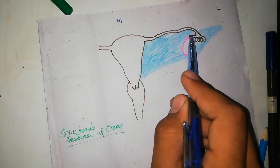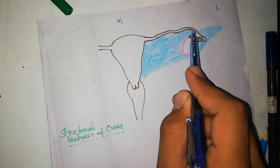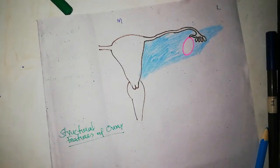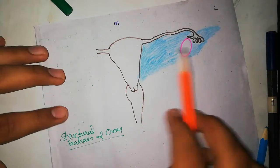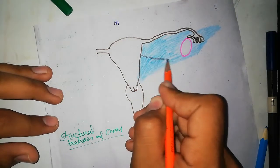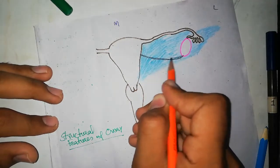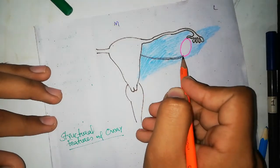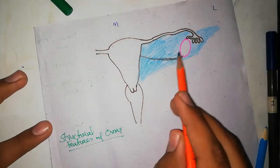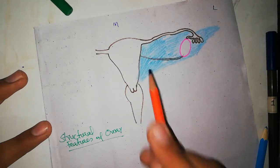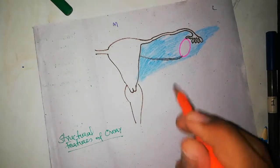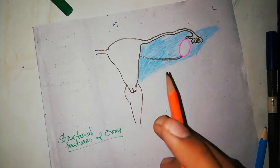Superiorly the ovary is attached via the fimbriae of the infundibulum. Inferiorly, there is another structure attached to the inferior pole called the round ligament of the ovary, which connects the lower pole of the ovary to the lateral uterine border. This round ligament is present inside the broad ligament of the uterus, between its two peritoneal folds.